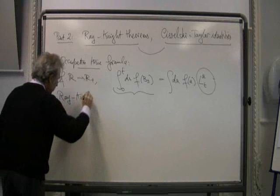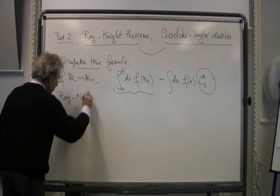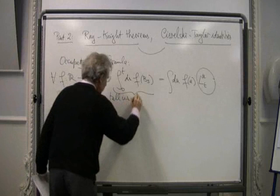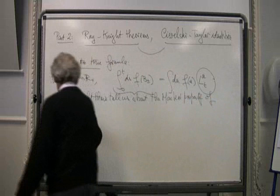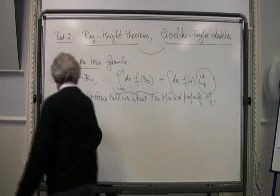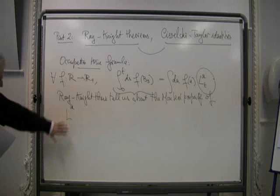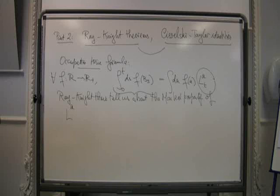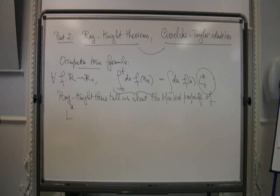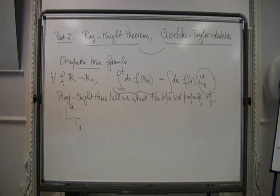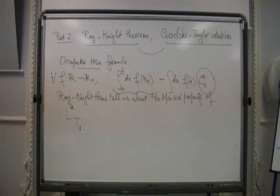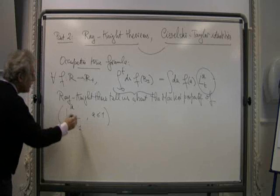The Ray-Knight theorems tell us about the Markov property of L_A. But it is very easy to remember — you get into a terrible situation if at the time you are looking at the local times, Brownian motion is not fixed. So you'd better look at times when Brownian motion is fixed. The Ray-Knight theorems really tell us about the law of L_A(T1), where T1 is the first hitting time of 1 by Brownian motion.